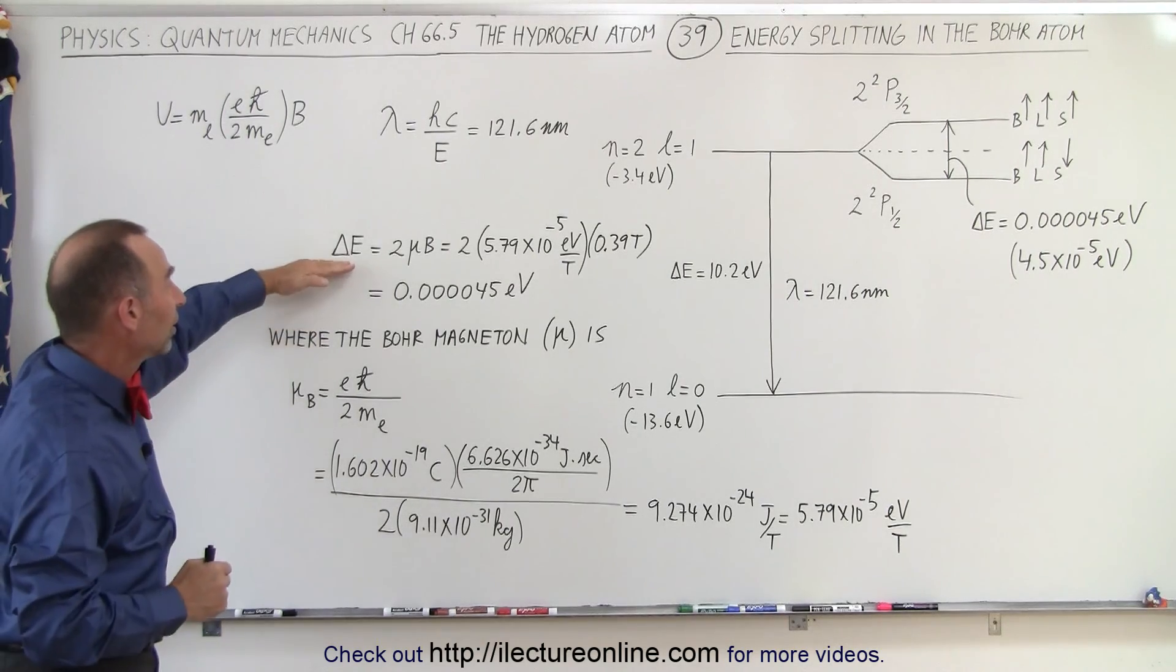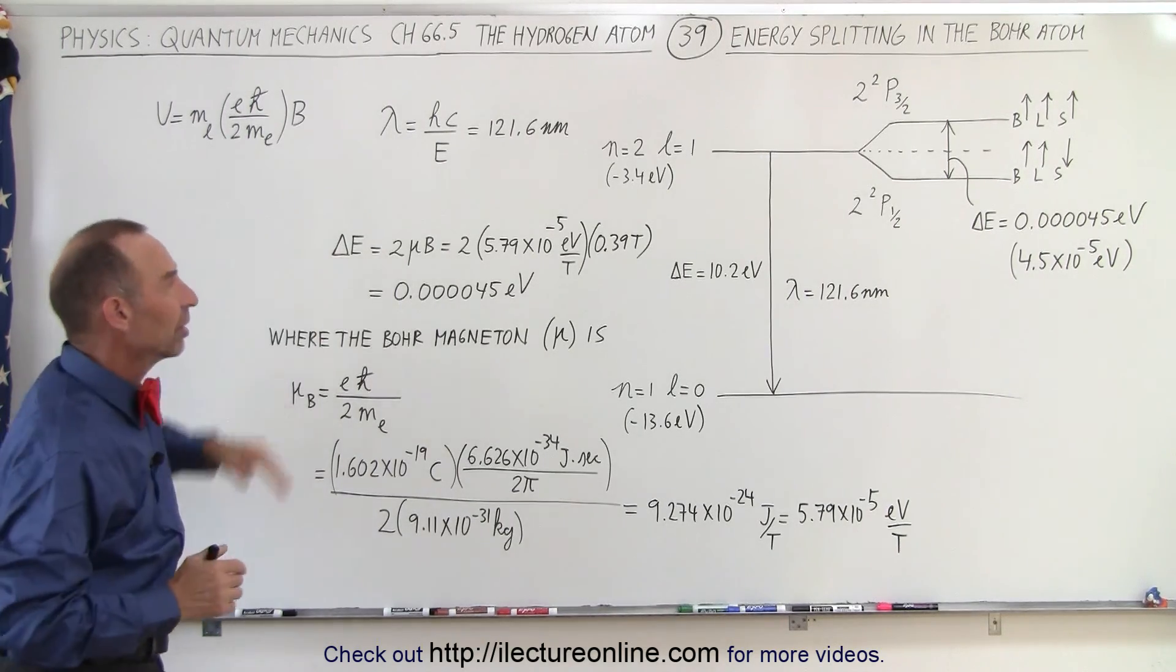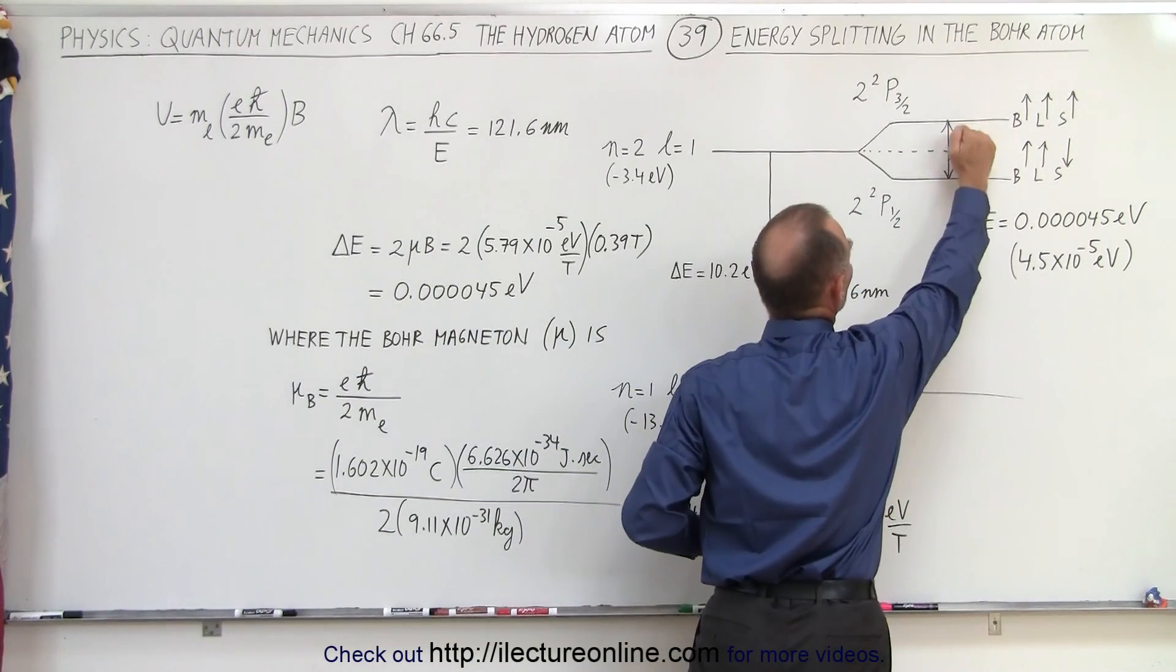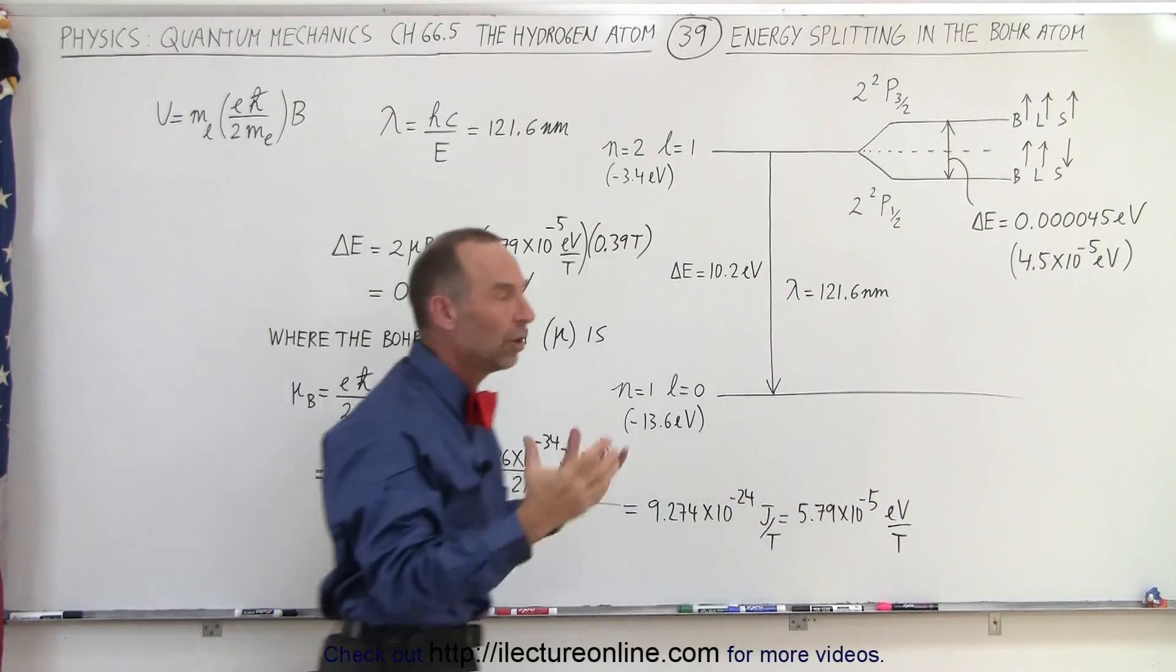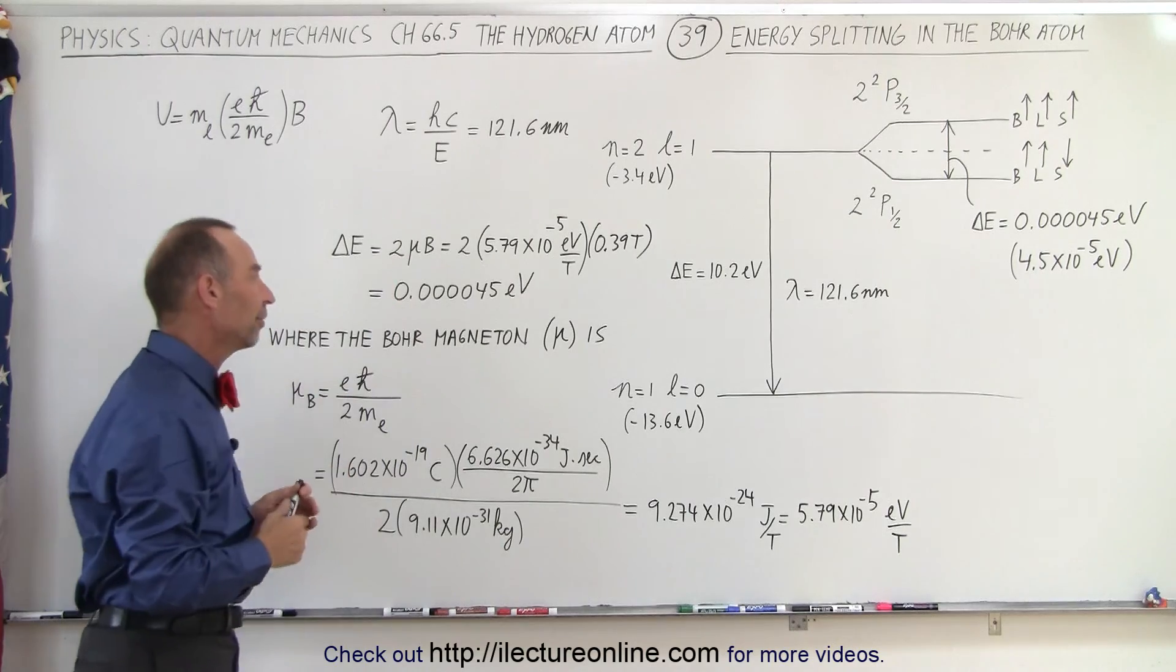Of course, since we have an increase in energy in one direction and a decrease in energy in another direction, we multiply it times 2 to get the full value.